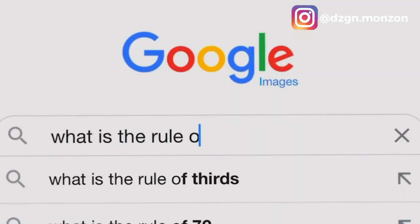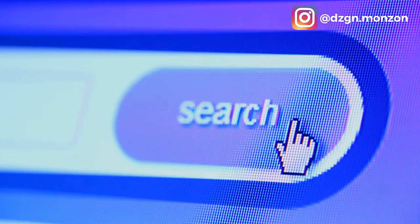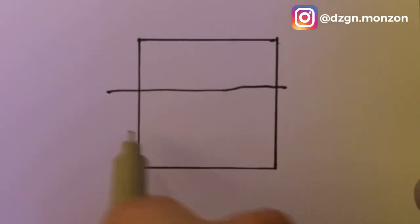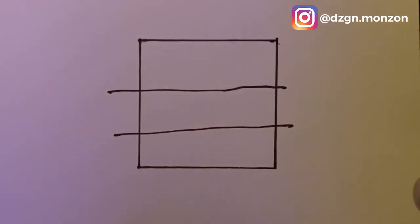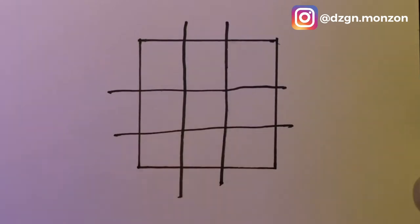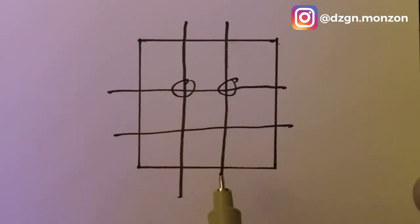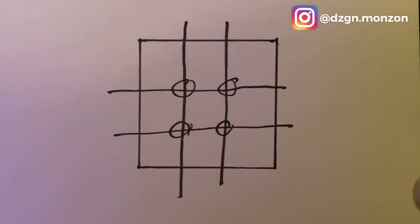So what is the rule of thirds? This technique divides the page into equal thirds with two horizontal lines and two vertical lines. The intent is to create a more dynamic composition, generating energy and points of interest at any of the four intersection points among the vertical and horizontal lines.